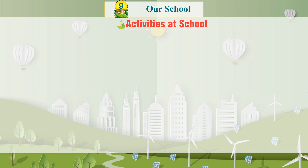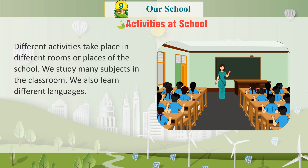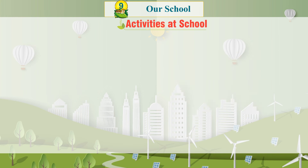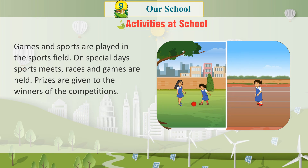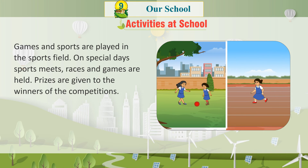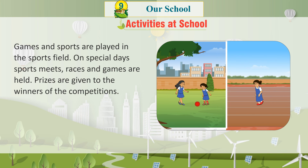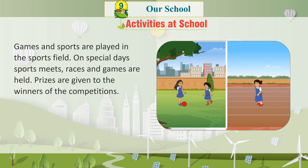Activities at school. Different activities take place in different rooms or places of the school. We study many subjects in the classroom and also learn different languages. Games and sports are played in the sports field. On special days, sports meets, races and games are held, and prizes are given to the winners of the competitions.